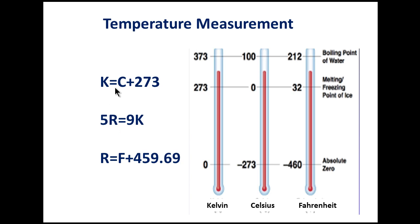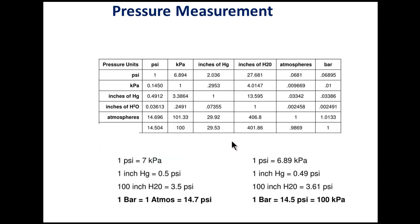In interviews or MCQs, temperature scale equivalency may be asked. There are four scales: Kelvin, Celsius, Fahrenheit, and Rankine. Conversion equations: K = C + 273; Rankine = Fahrenheit + 459.69. The graph shows boiling point equivalencies across scales.